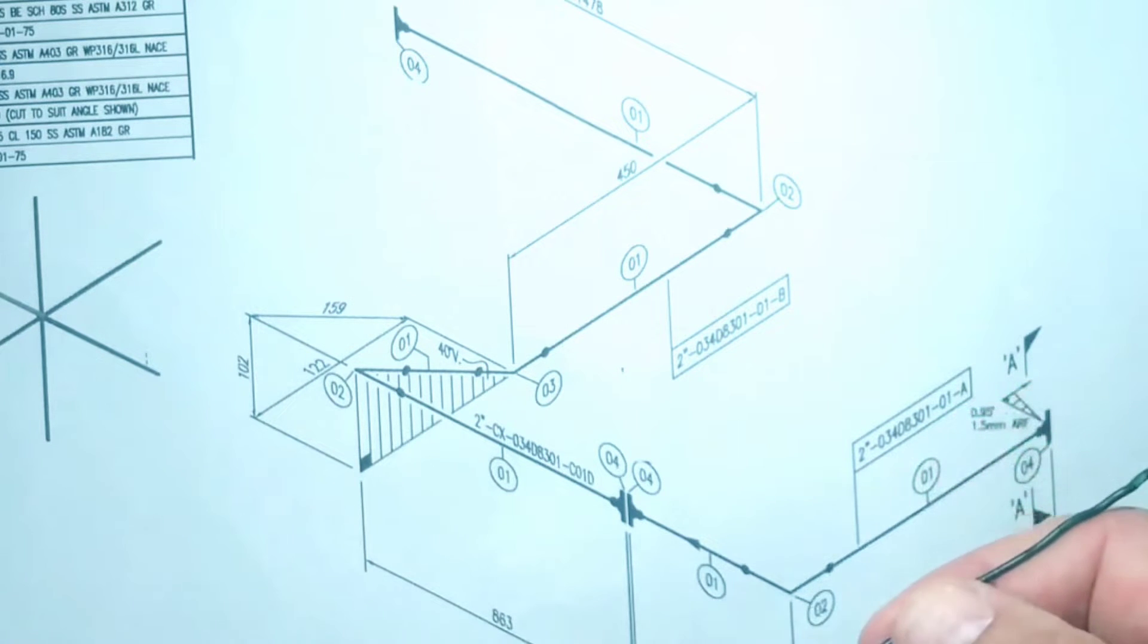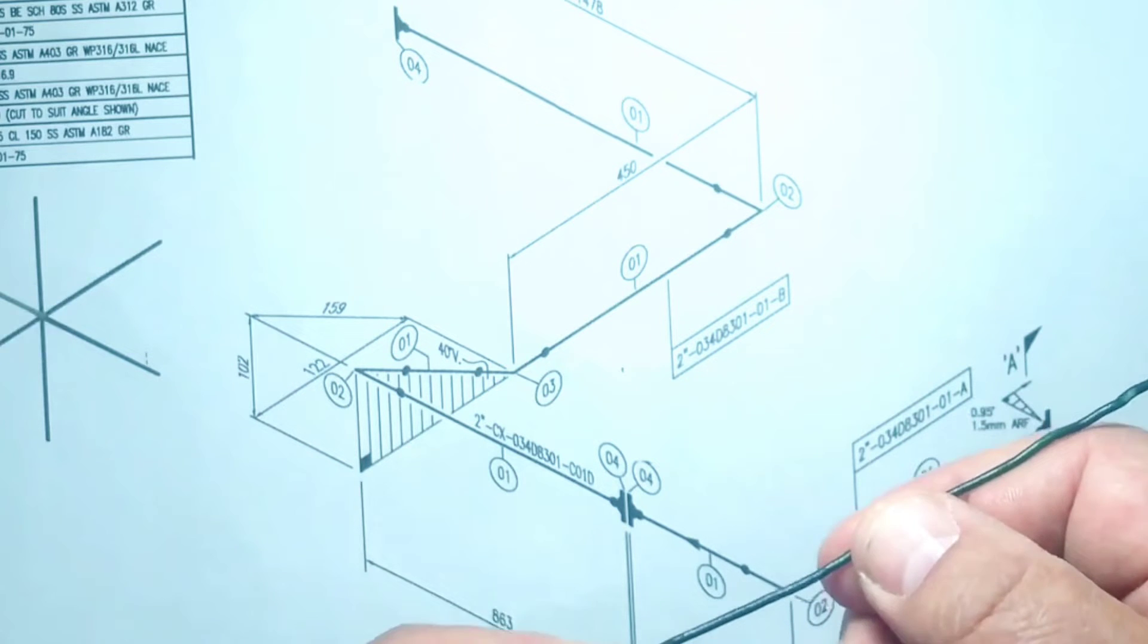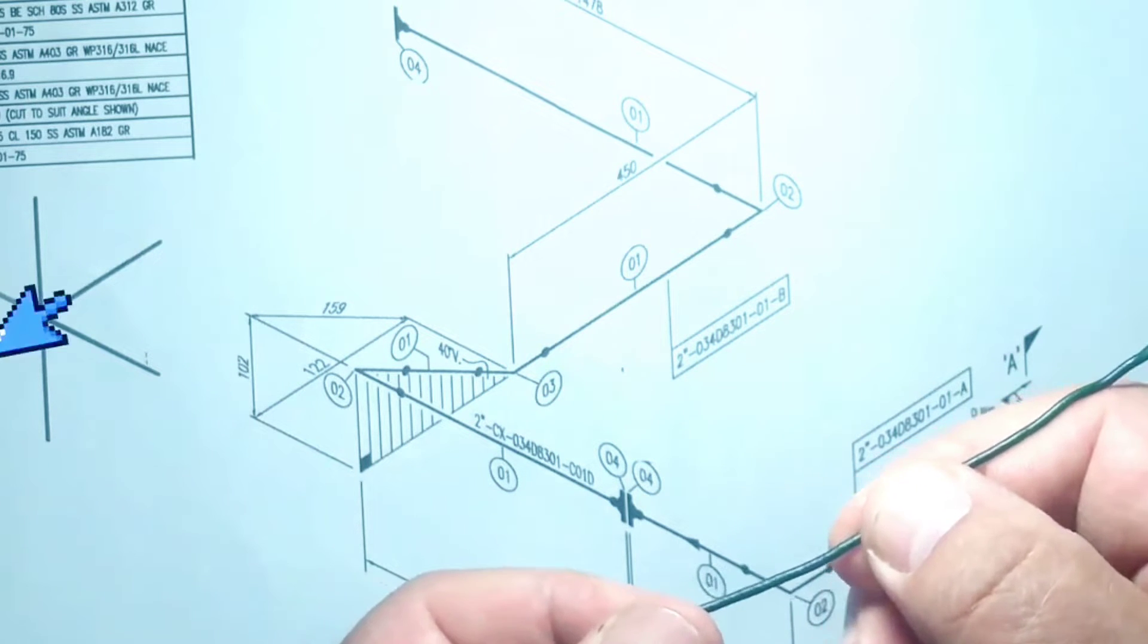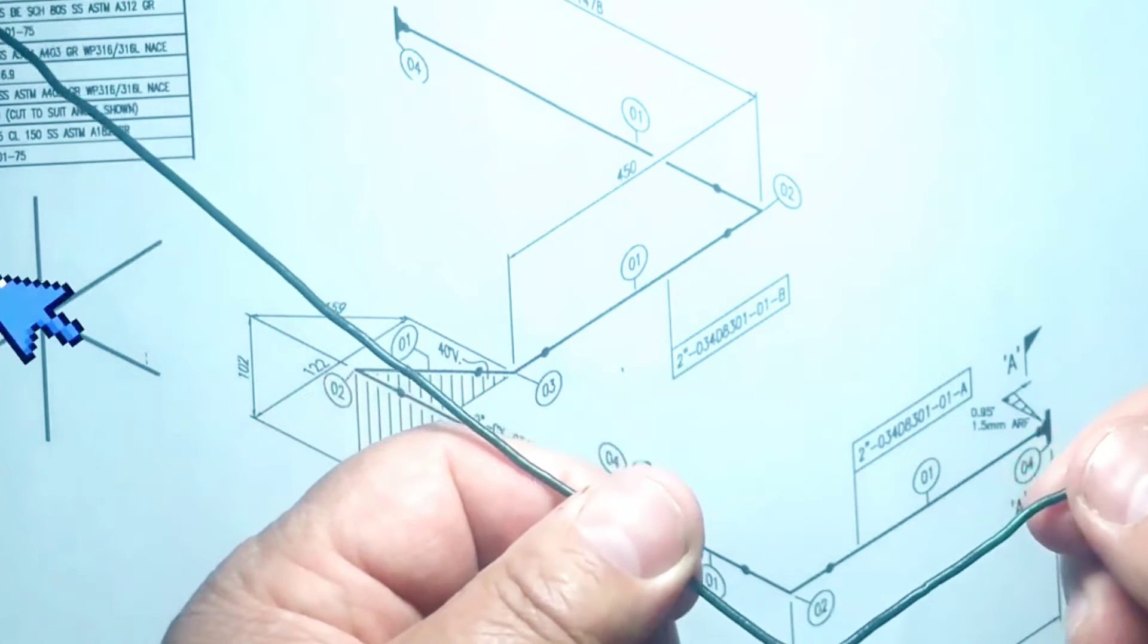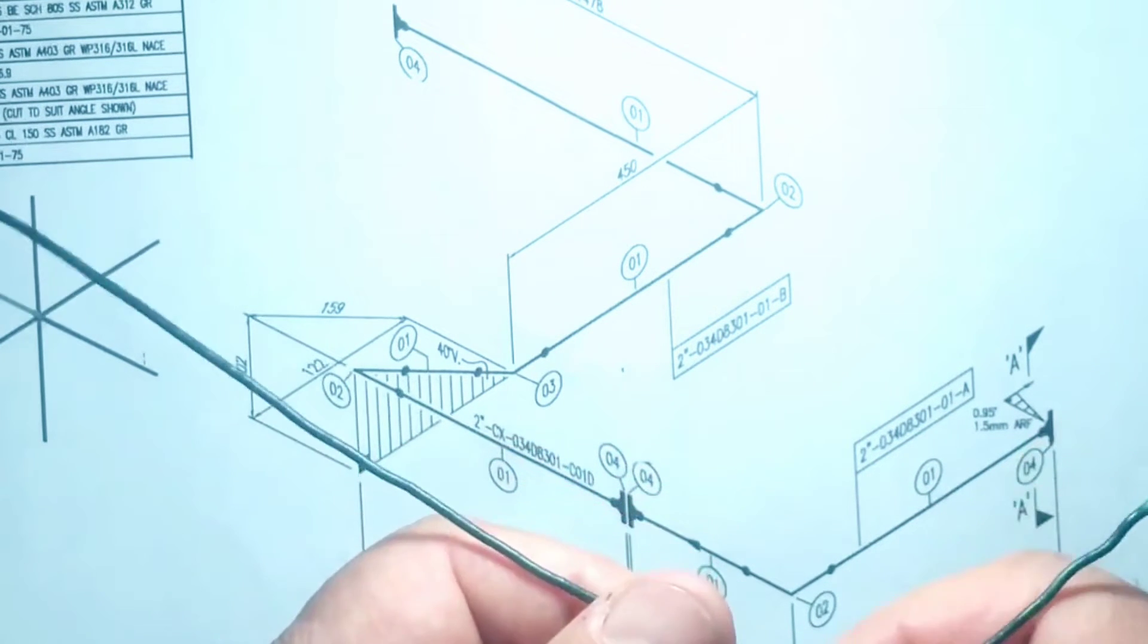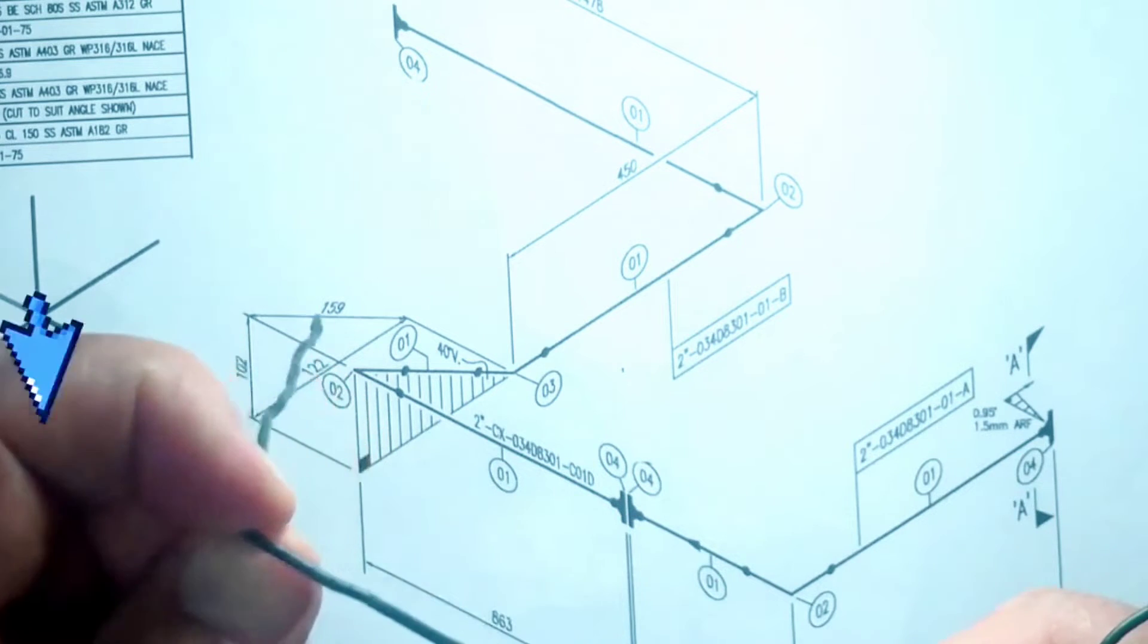Since the pipeline is traveling to the west direction, we hold the wire in the west direction. Then the wire bends first to the north, then down and then to the east.